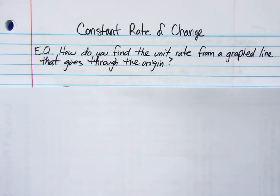Constant rate of change. How do you find the unit rate from a graph line that goes through the origin?